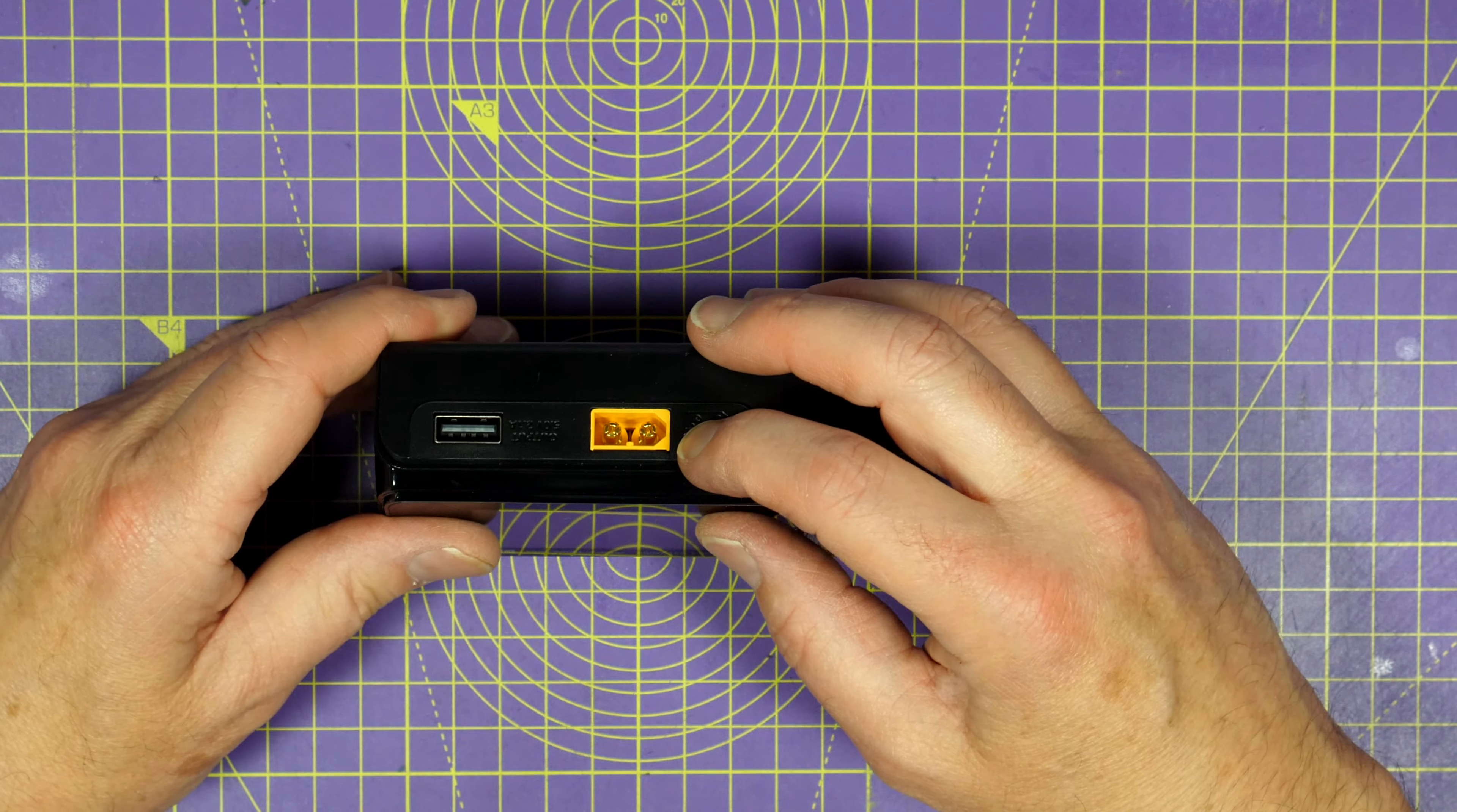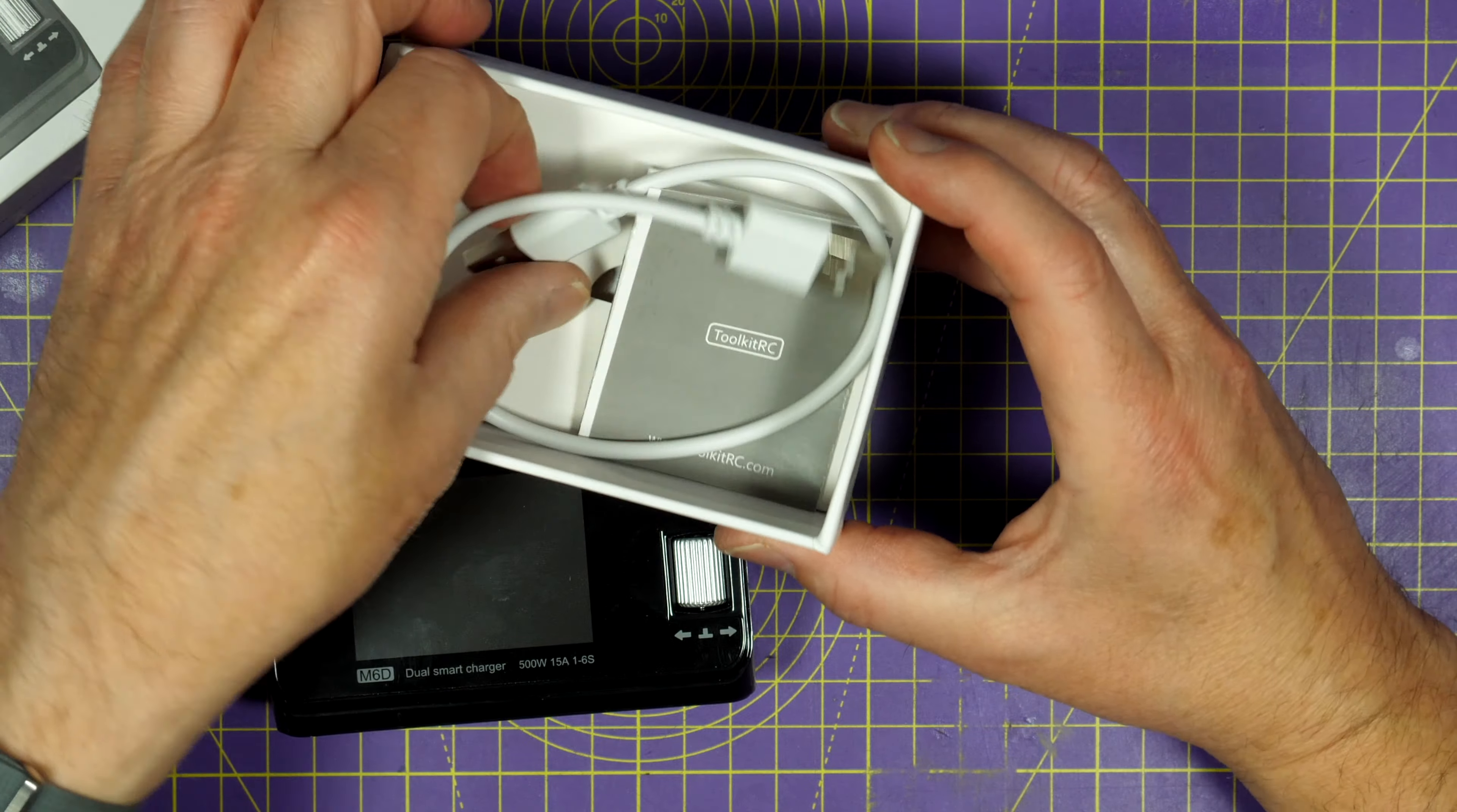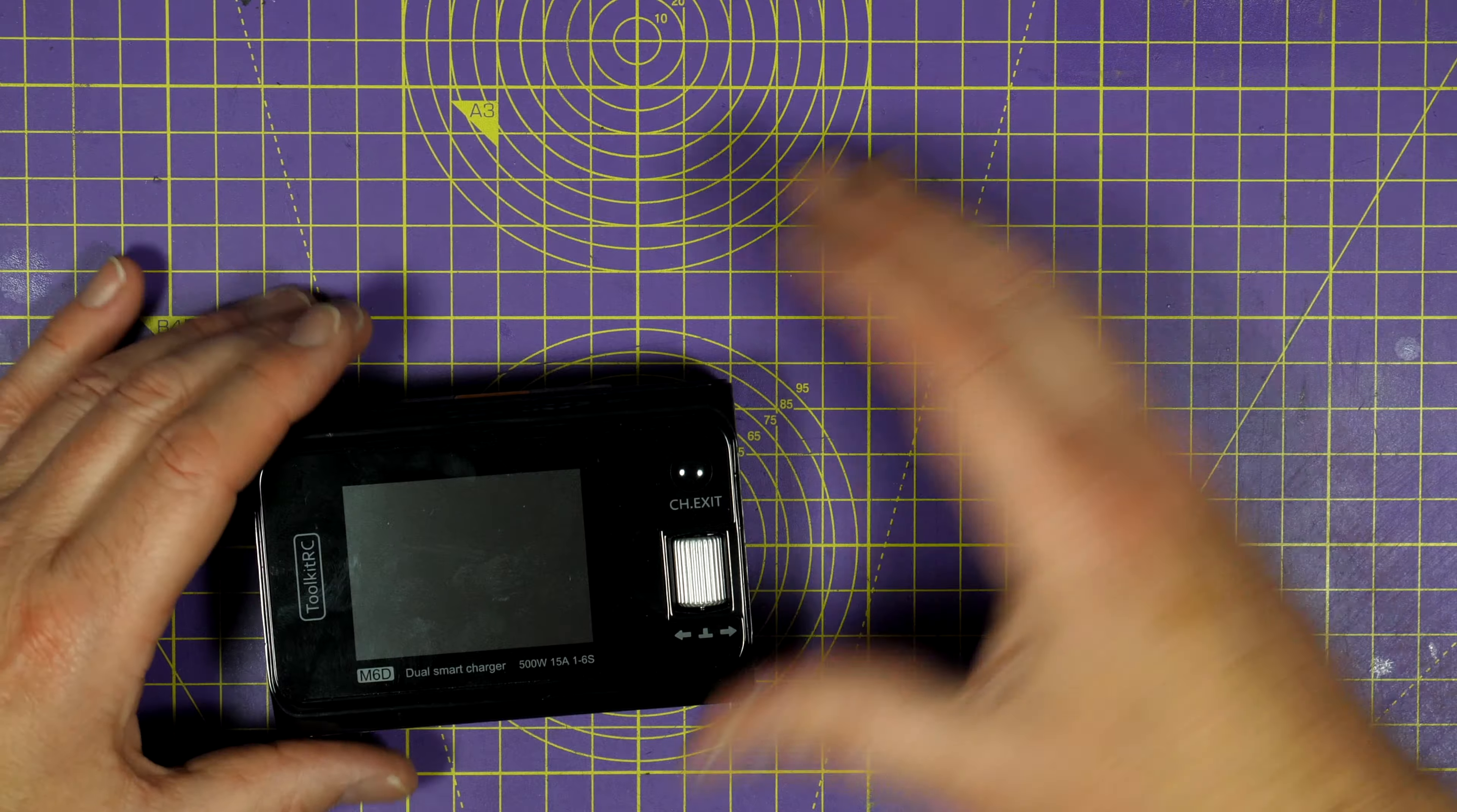On this side is the power input on an XT60 and there's a USB connector. And they also provide a USB cable in the box as well. That's all you get in the box and there's a little manual with it. To be honest you don't need to read that.